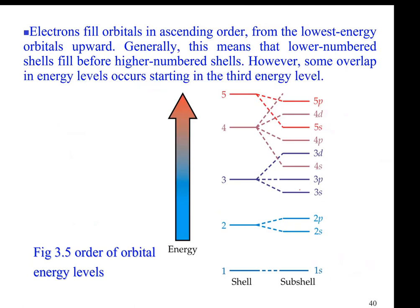Looking at the relative energy of electrons: 1s, which is on the first shell, has minimum energy. Then 2s, on the second shell, is the next higher energy because it's further from the nucleus. On the second energy shell, we also have 2p, and P has more energy than S. On the third shell, we have S, P, and D. So 3s has minimum energy in the third shell, then 3p, and then 3d has more energy than 3p.